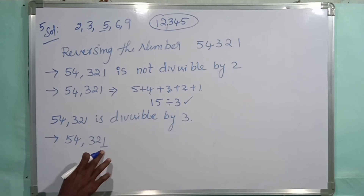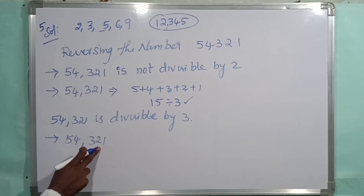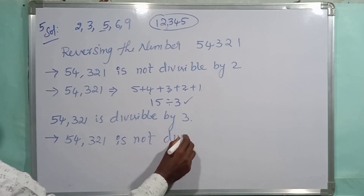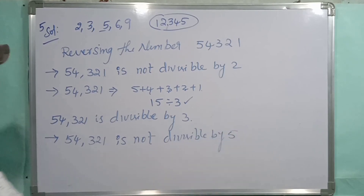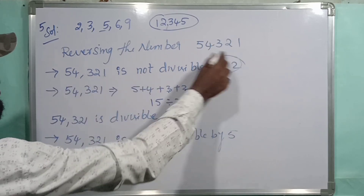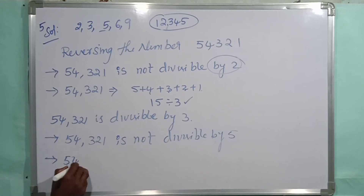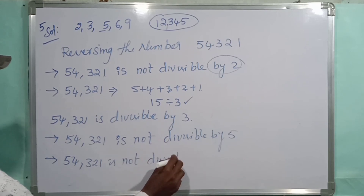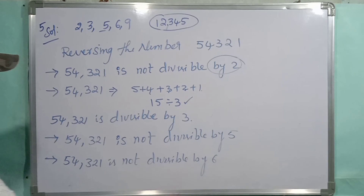Now for 5: the divisibility rule for 5 requires the units place to be 0 or 5, but here the units digit is 1, so 54321 is not divisible by 5. For 6: the number must be divisible by both 2 and 3. Since 54321 is not divisible by 2, it is not divisible by 6 either.